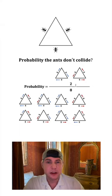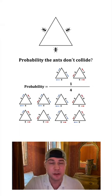We can get rid of all this stuff. Two eighths simplifies to one fourth. There's a one fourth probability that the ants won't collide.